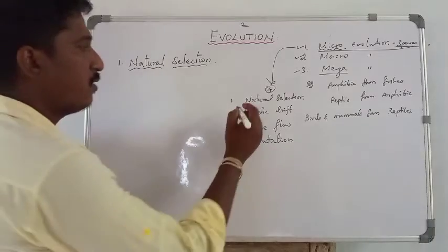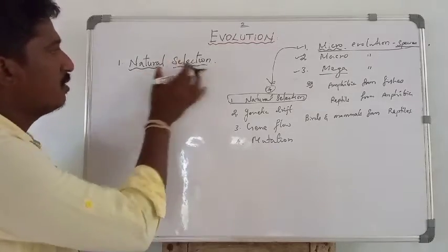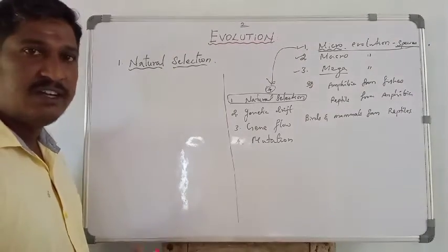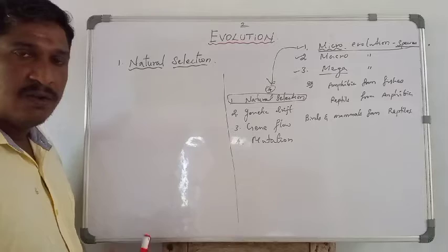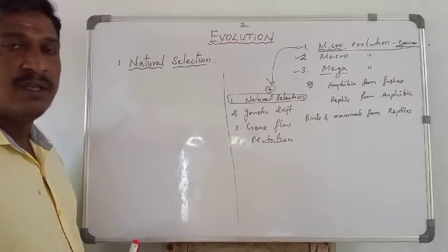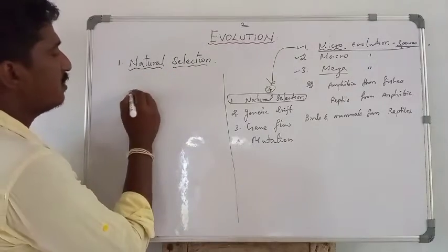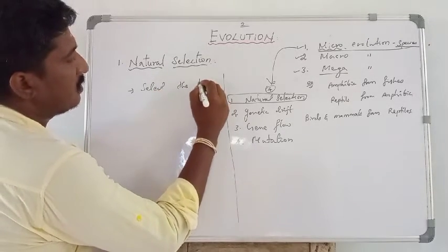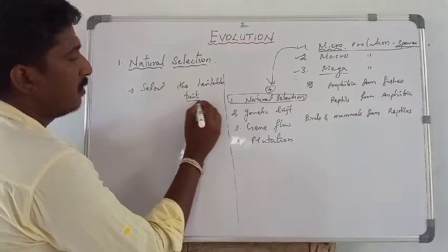Now we are going to see the first force of micro evolution: natural selection. Nature will favor a particular species to have a certain heritable character which makes the organism better at survival. Natural selection selects the heritable trait.